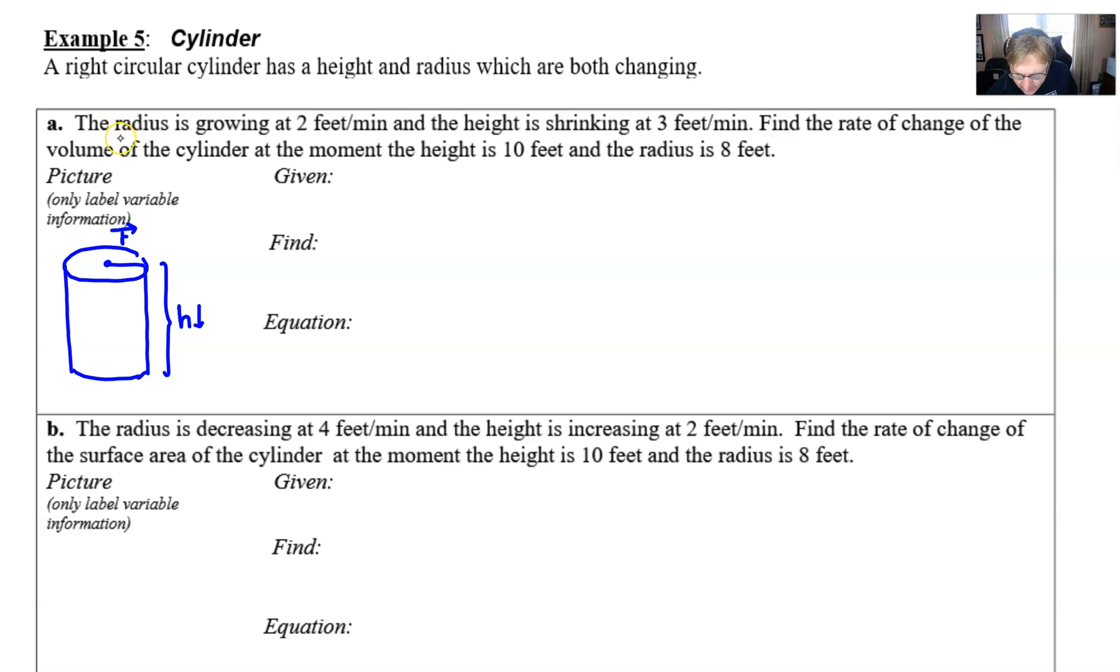For the given, I always like to underline my rates that have been provided. Radius growing at 2 feet per minute, so we call that dr/dt = +2 because of the word growing. Then there's another word here, height shrinking at 3 feet per minute, so dh/dt = -3.